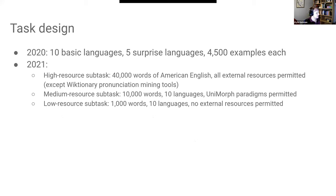In 2021, in response to comments from the community, we split into three subtasks. A high-resource subtask focused entirely on American English with about 40,000 words, for which all external resources were permitted — you could even do transfer from a different pronunciation dictionary with different conventions. The medium-resource subtask had 10,000 words each for 10 languages, and you were permitted to use Unimorph paradigms and features. The low-resource subtask gives you about 800 training examples, and you're not permitted to use any external resources other than transfer across the other languages.